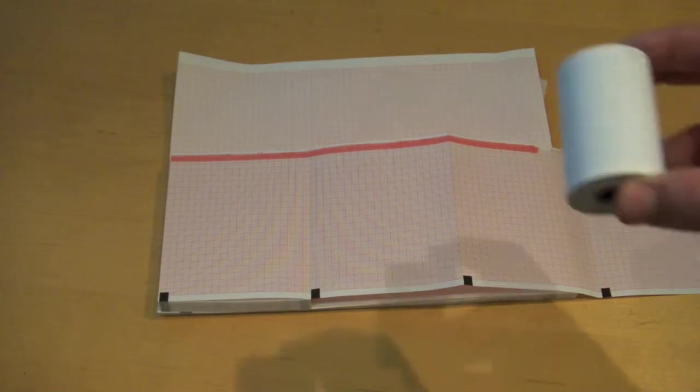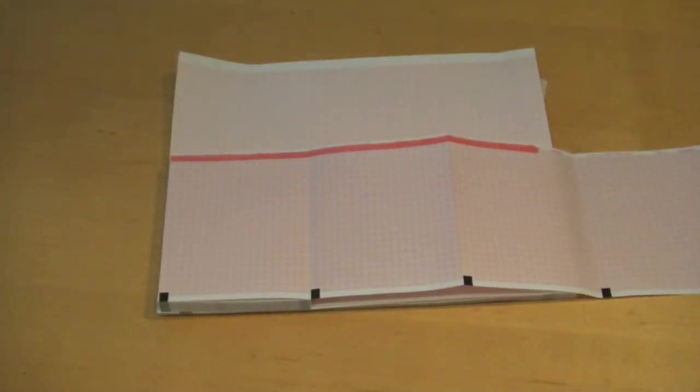When you unroll paper off a roller like this it tends to roll back up which can make it a little difficult to read unless you're mounting it to a mounting board or piece of paper.